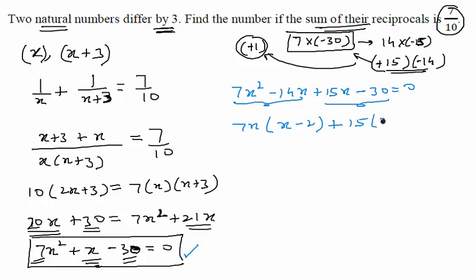And in next two terms, let us take 15 common. Again we will be left with x minus 2. Further you can take x minus 2 common. This should give us 7x plus 15 in the remaining bracket.